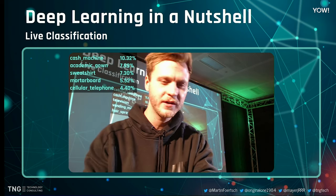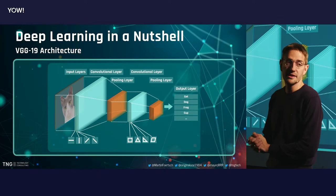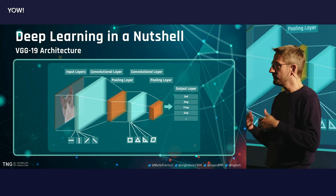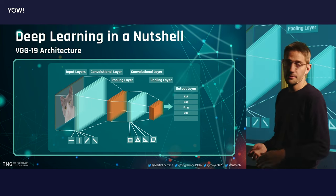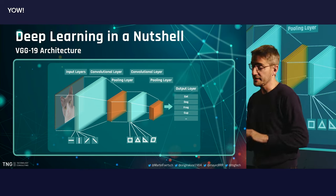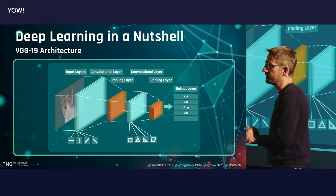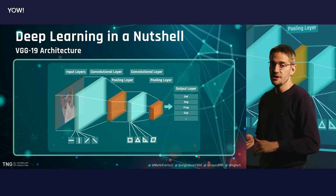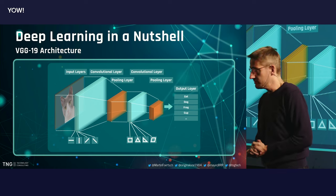So what exactly is VGG-19? VGG-19 is a layered network consisting of 19 different layers — that's also why it's called VGG-19. These are not fully connected layers like we had before, but so-called convolutional layers, though the basic principle is still the same. You put in a picture at the beginning, the first layer detects simple shapes, and the layers further in detect more advanced shapes. At the end, you have an output that tells you how likely the image is a cat, a dog, a frog, or something else.